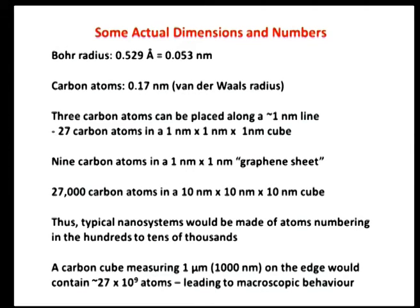If you had a cube measuring 1 nanometer by 1 nanometer by 1 nanometer of carbon, it would contain 27 carbon atoms. In a current graphene sheet — a 2-dimensional object measuring 1 nanometer by 1 nanometer — you would have 9 carbon atoms. In a cube of 10 nanometers on the edge there would be 27,000 carbon atoms. A typical nano system would be made of hundreds to tens of thousands of atoms. By comparison, a carbon cube measuring 1 micrometer on the edge would contain about 27 billion carbon atoms — already a large collection, no longer in the nano regime.